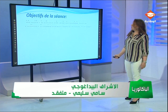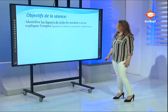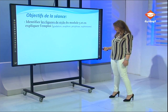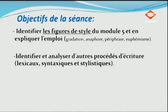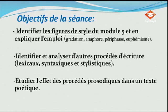On commence par présenter les objectifs de la séance. Le premier objectif : identifier les figures de style du module 5 et en expliquer l'emploi. Nous allons voir la gradation, l'anaphore, la périphrase et l'euphémisme. Deuxième objectif : identifier et analyser d'autres procédés d'écriture — lexicaux, syntaxiques et stylistiques.